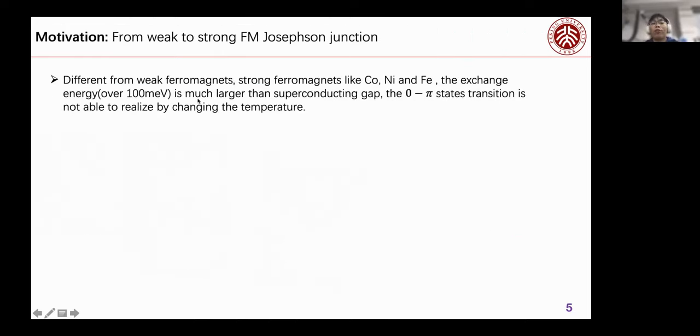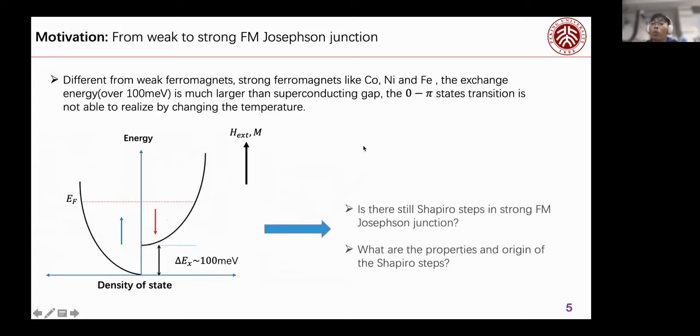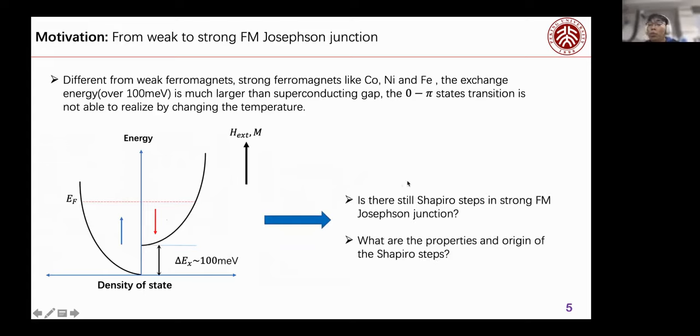But different from weak ferromagnets, the strong exchange energy of strong ferromagnets is much larger than the superconducting gap. So the zero to π state transition cannot be realized by only changing the temperature. So we want to know, is there still Shapiro Steps in strong ferromagnetic Josephson Junction? And if the steps still exist, what are the properties and origin of those Shapiro Steps? That's why we do the strong ferromagnetic Josephson Junction.